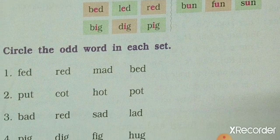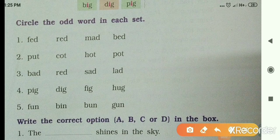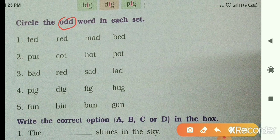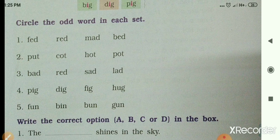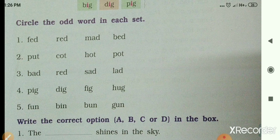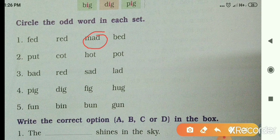Read in this way. Now children, circle the odd word in each set. You have to find the odd word. From the previous exercise you learned that in word groups, the middle letter changes. So in the first set — fed, red, mad, bad — the odd one is M, A, D — mad. Circle it.